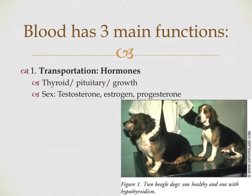We also have the transportation of hormones. The endocrine system releases hormones directly into the bloodstream, and the blood carries those hormones to different parts of the body — whether to a target organ or as a releasing hormone going to another endocrine organ. The bloodstream carries all those hormones where they need to go: pituitary, thyroid hormone, growth hormone, and sex hormones like testosterone, estrogen, and progesterone.